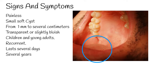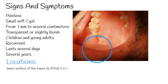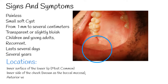The most common location to find a mucocele is the inner surface of the lower lip. Other locations include the inner side of the cheek — known as the buccal mucosa — the anterior ventral tongue, and the floor of the mouth. Other locations are also possible.